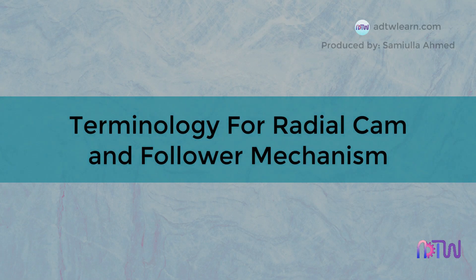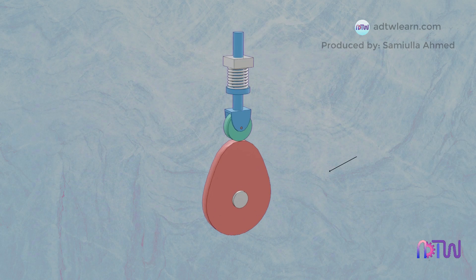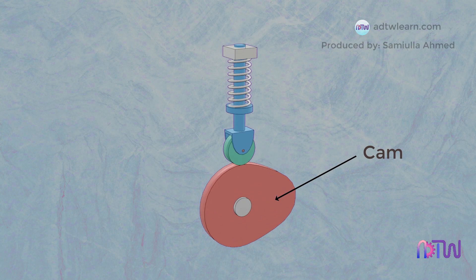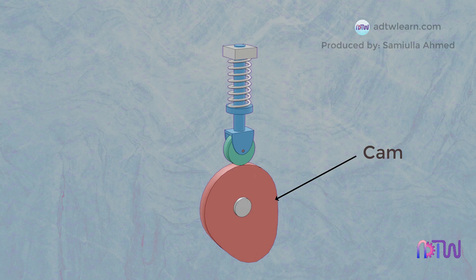Terminology for the Radial Cam and Follower Mechanism. A cam is a mechanical member used to provide desired motion or displacement to the follower by direct contact.